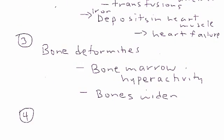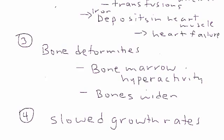The fourth and final symptom and sign I wanted to mention is slowed growth rates. The bony deformities contribute to that, and so does the anemia. The patient with thalassemia is chronically anemic, so that can contribute to the slow growth rates.